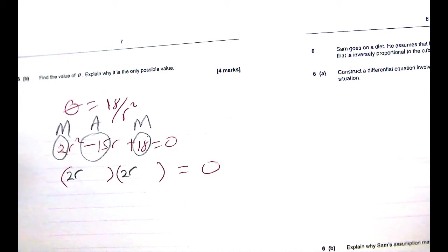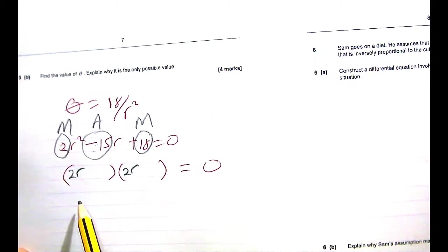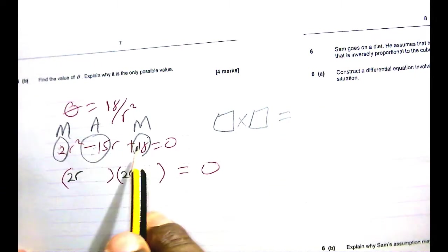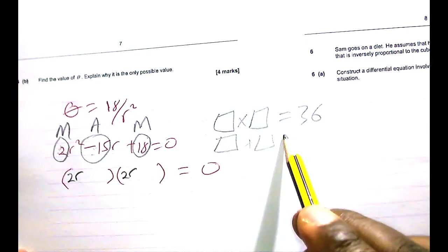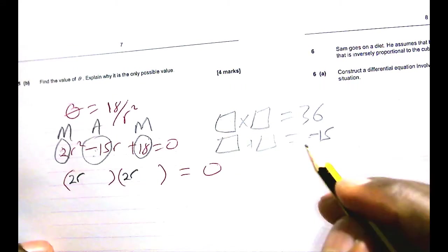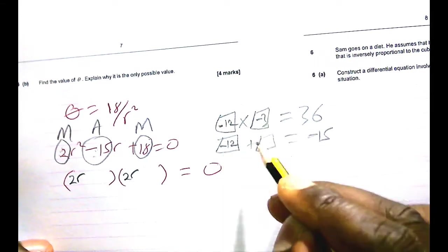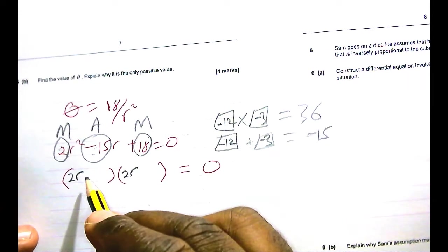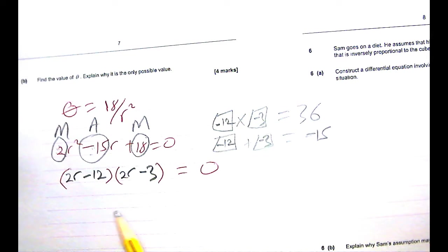We want to be able to get 2 numbers that multiply to give whatever the 2 guys on the end multiply to give, and they should add up to give whatever the guy in the middle gives. So I need 2 numbers that multiply to give—what's 18 times 2?—36. And they should add up to give—what is that?—negative 15. What 2 numbers come to your mind? I can think of 12 and 3, but that's going to be negative 12, negative 3.